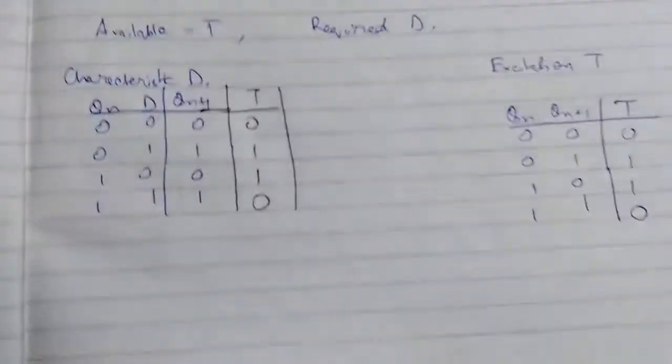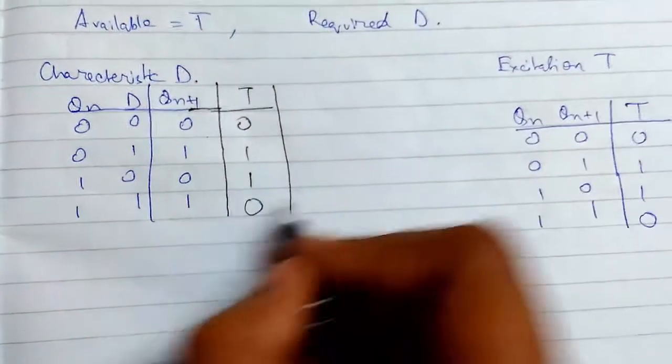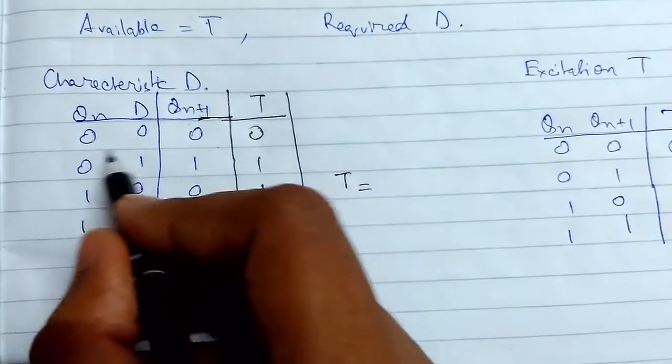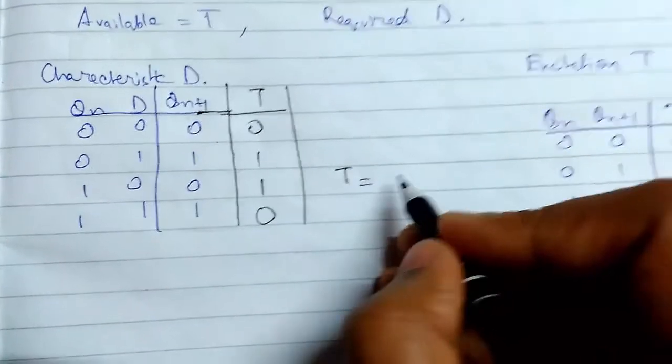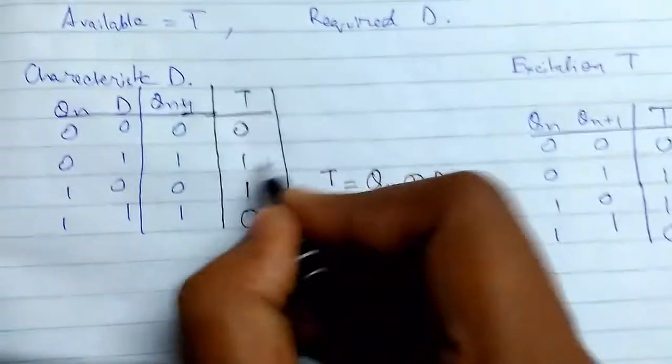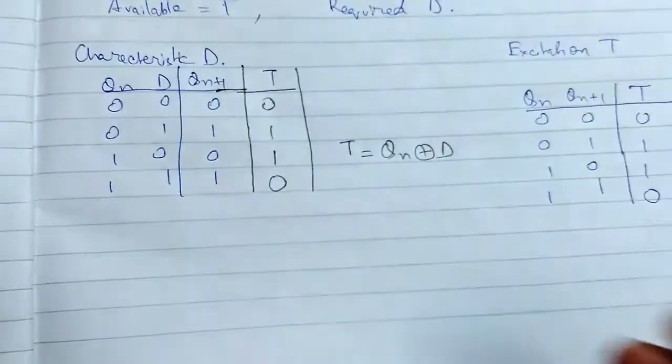So now we need to find the expression for it. So this is pretty simple. You can see that this is the XOR of this. So this will be QN XOR of D will give the T input, T output value.